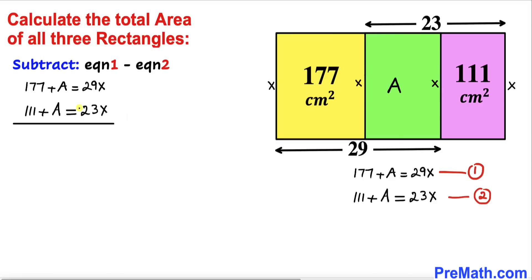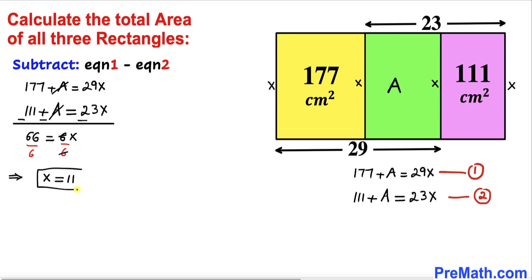Now let's subtract Equation 2 from Equation 1. Changing the signs accordingly, the A terms cancel out, giving us 66 equals 6x. Dividing both sides by 6, our x value turns out to be 11 centimeter.